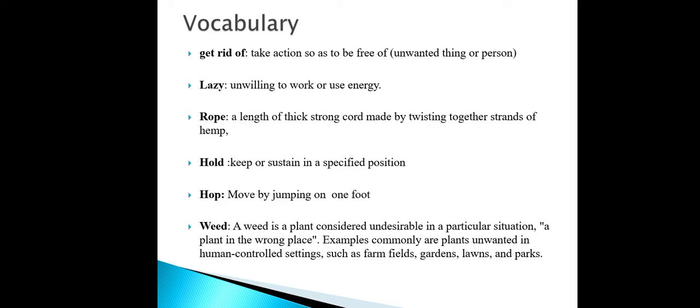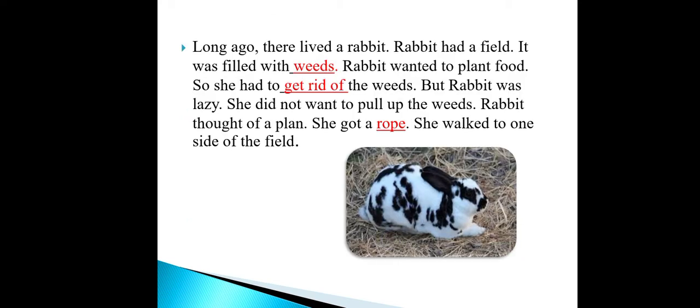the key vocabulary words are: get rid of, lazy, rock, hold, hawk, and weed. This is the first paragraph that you have to go through — it is about a rabbit.